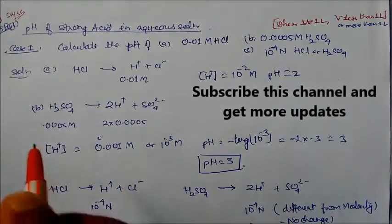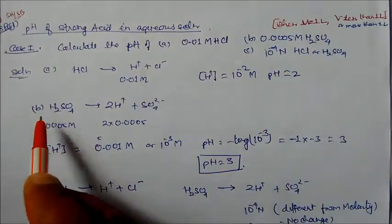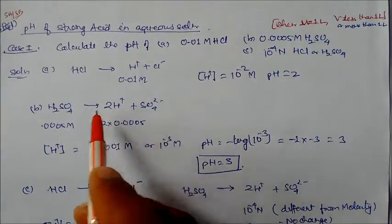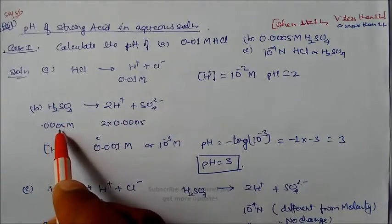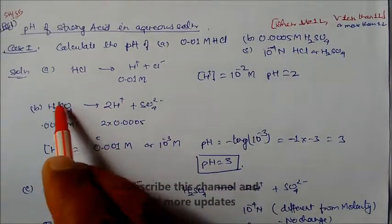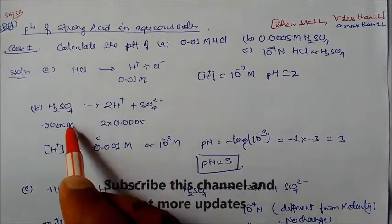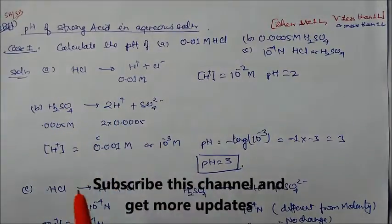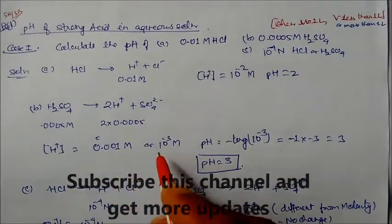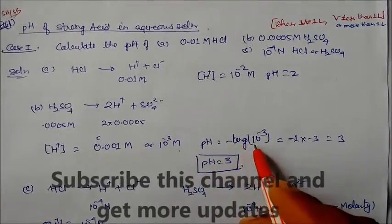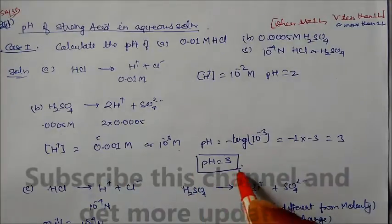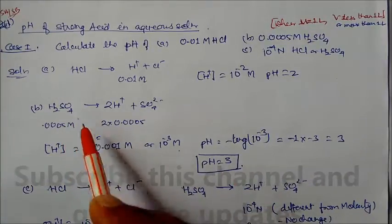For (B) 0.0005 molarity H2SO4: H2SO4 dissociates into 2H⁺ and SO4²⁻. The initial concentration is 0.0005 molarity, but since H2SO4 gives 2H⁺ ions, the total H⁺ concentration is 2 × 0.0005 = 0.001 molarity, or 10⁻³ molarity. Therefore, pH = −log(10⁻³) = 3.